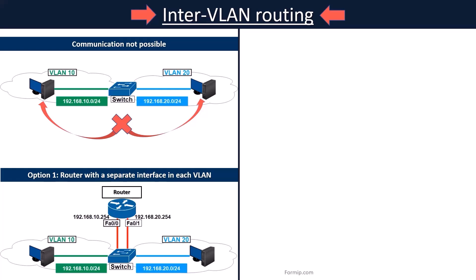On this topology, the PCs of VLAN 10 must go through the router to be able to communicate with those of VLAN 20. The problem with this solution is that you have to use a router interface for each VLAN. The more VLANs, the more interfaces you have to use on the router, so this solution is not really scalable.